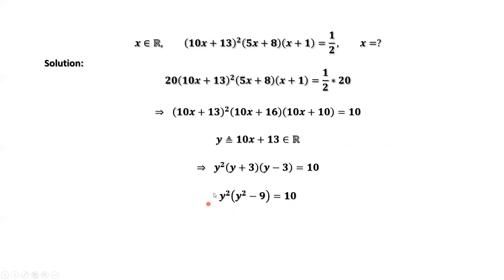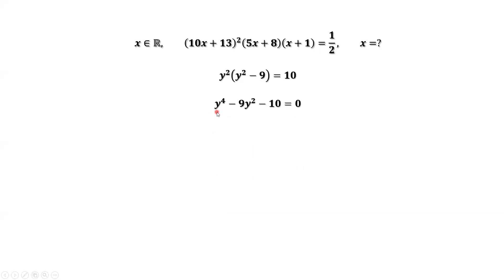We continue to simplify this equation. We have y⁴ − 9y² − 10 = 0. In theory, this is a fourth-degree equation. But if we consider y² as one variable, this is a quadratic equation in y².